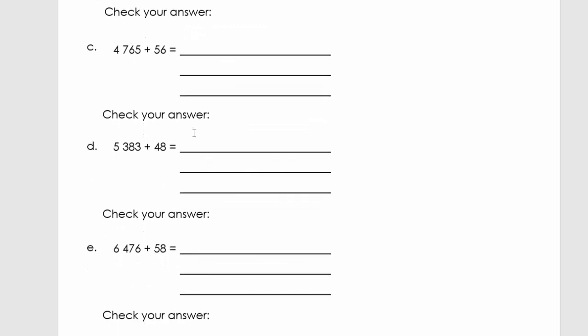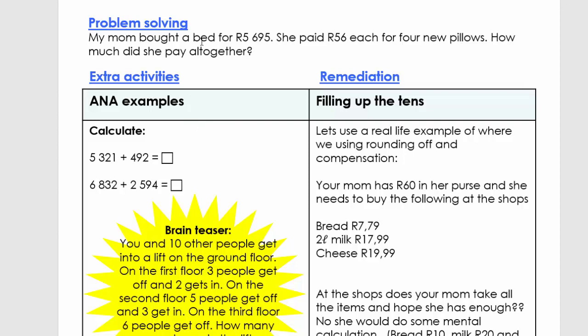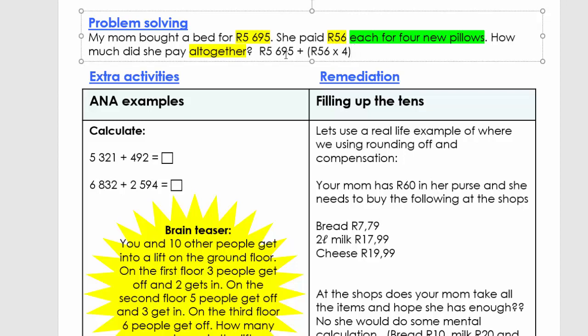Remember, checking your answers is only an additional activity at the moment. Now with problem solving, you're going to use the tips that I gave you before where you're first going to identify the numbers. Then what you're going to do is identify the keyword. My mom bought a bed for 5,695. She paid 56 each for four new pillows. How much did she pay all together? So we got two things. We know that we need to add because you got 'all together,' but what's very important is here: she paid 46 each for four new pillows. So what you need to do is have 5,696. I'm going to type it: 5,695, sorry. And you're going to plus, but now what you do is you have 56 times four new pillows, and then you're going to solve it. So good luck.